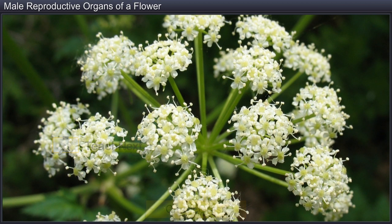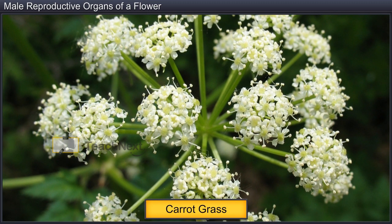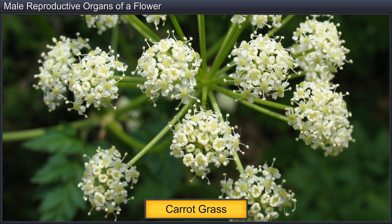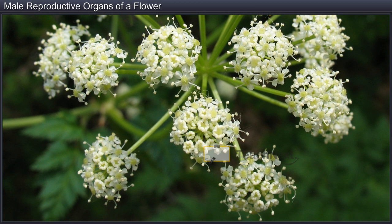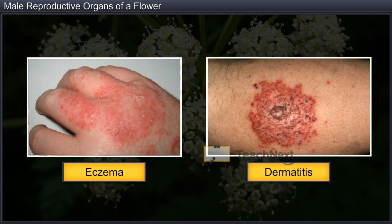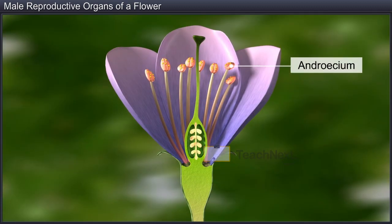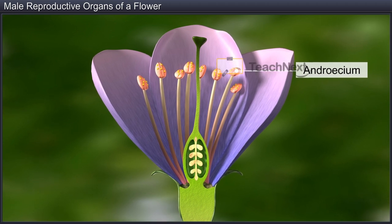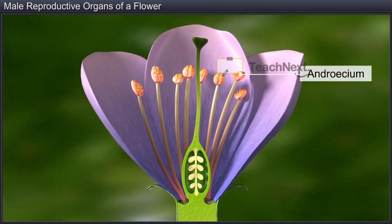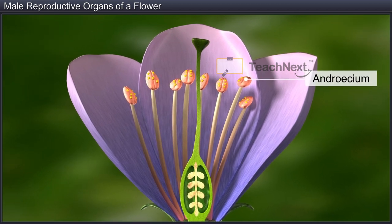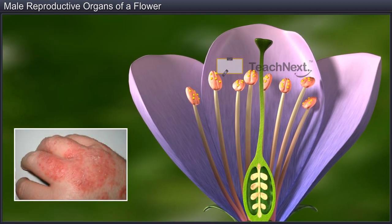In fact, the weed carrot grass or Parthenium hysterophorus and its pollen, found in non-cultivated lands in Punjab, causes allergies such as eczema, dermatitis and other skin diseases. Pollen, formed inside the stamen, plays an important role in plant propagation and also serves as a source of nutrition, although in some cases it may trigger allergies.